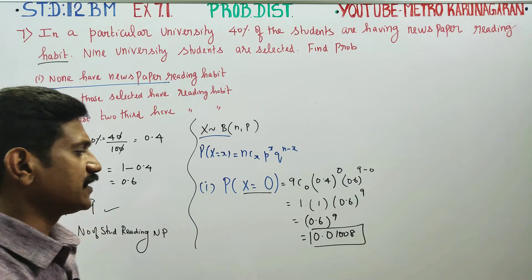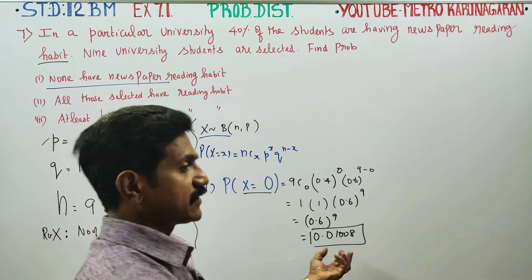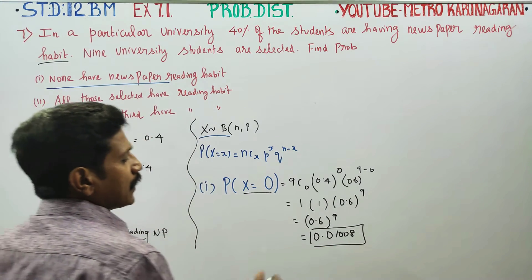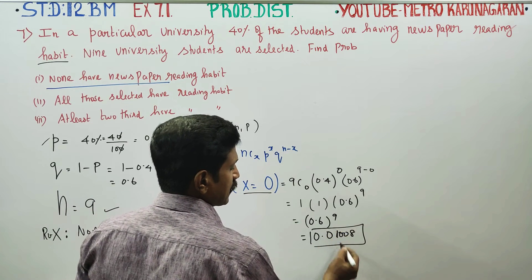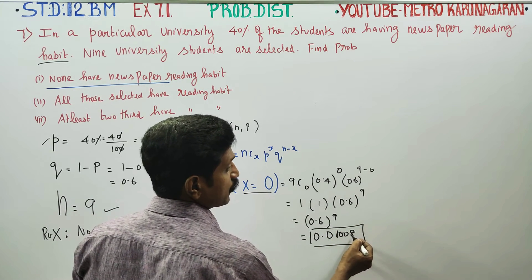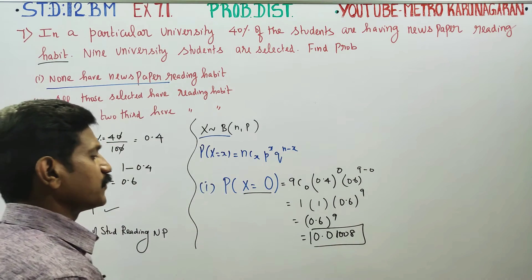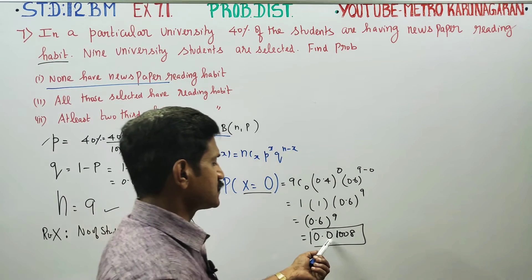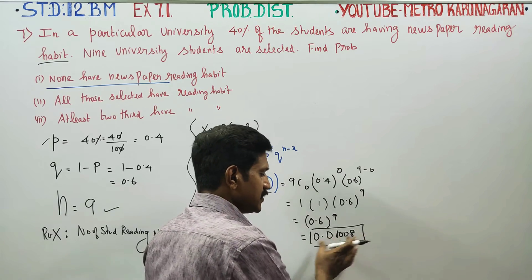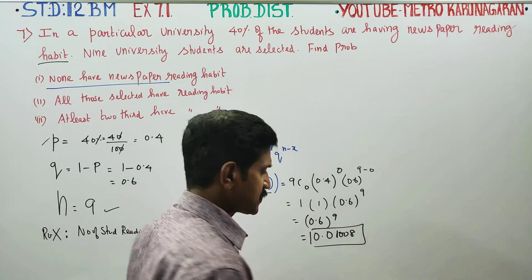You should take 4 significant digits for your answer. There is an approximate value. If you see 4 digits, please take 4 digits; if there are 3 digits, use 3. So the answer is 0.01008.